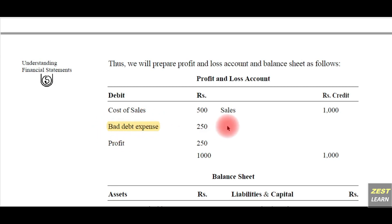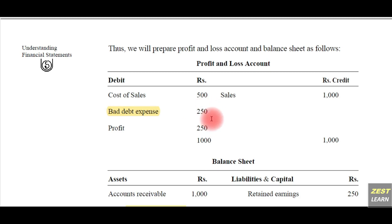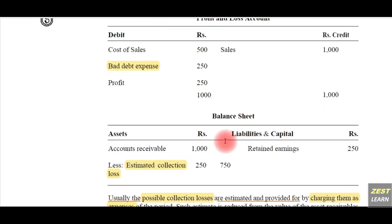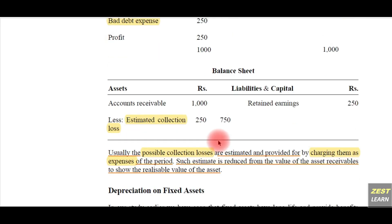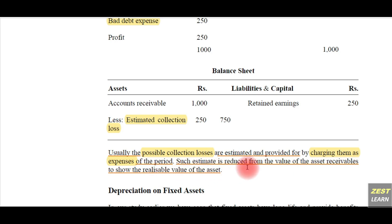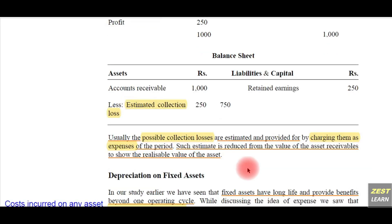In the profit and loss account itself, we show bad debt expense as a loss. If we assume that one credit sale of 250 rupees is not going to be collected, we show it as a loss, reducing the profit to 250 rupees. In the balance sheet, we also show it as an estimated collection loss, so the net realizable value of assets comes down to 750 rupees. These bad debts are estimated losses charged as expenses of the period, and the estimate is reduced from the value of receivables to show their net realizable value.